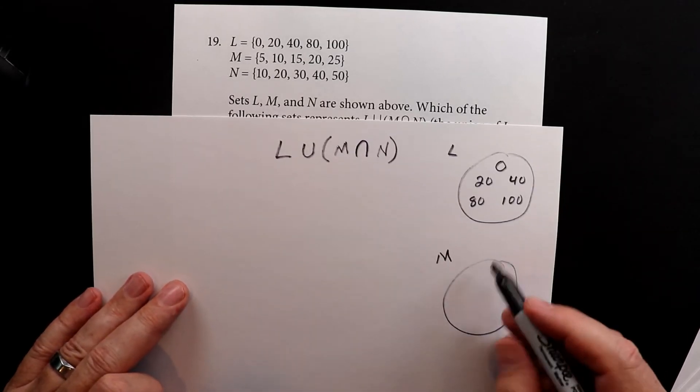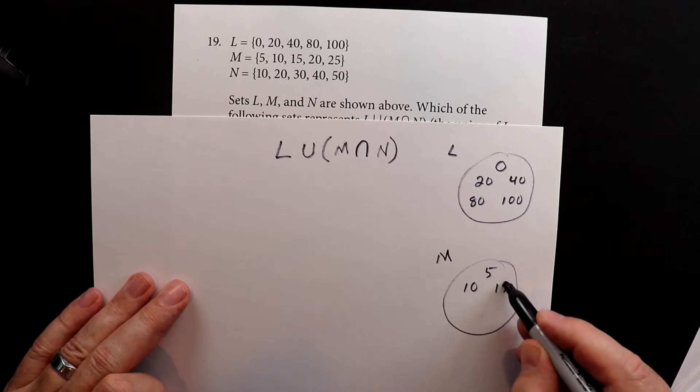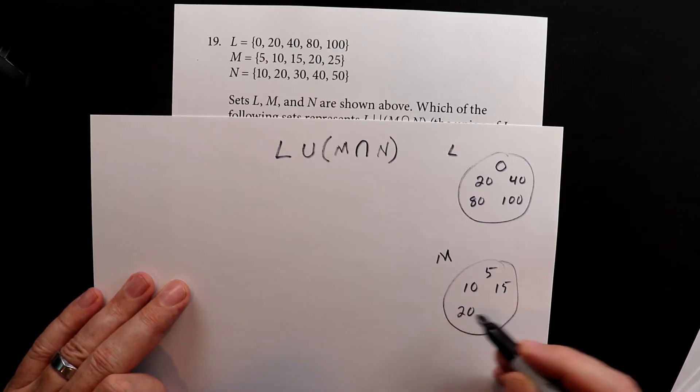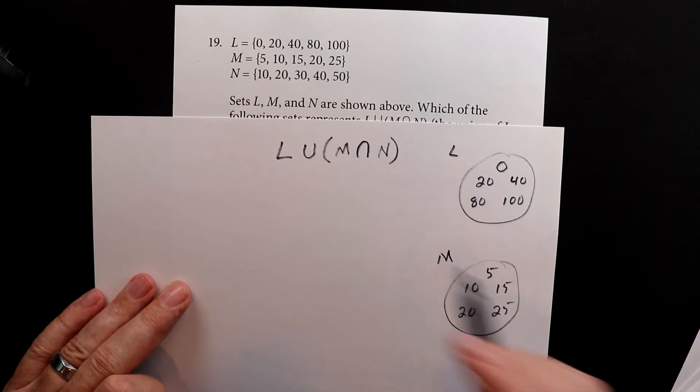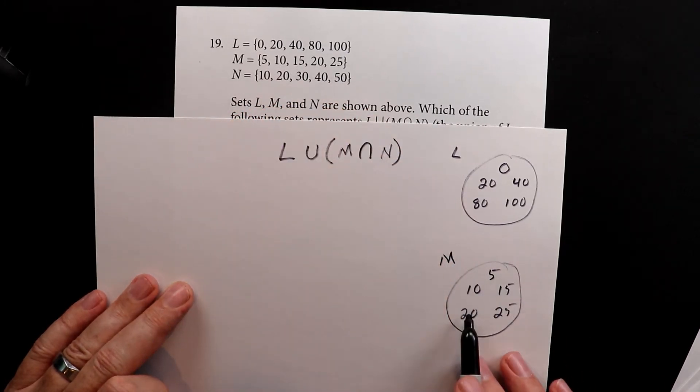We have 5, 10, 15, 20, and 25. 1, 2, 3, 4, 5. So we have 5, 10, 15, 20, 25.